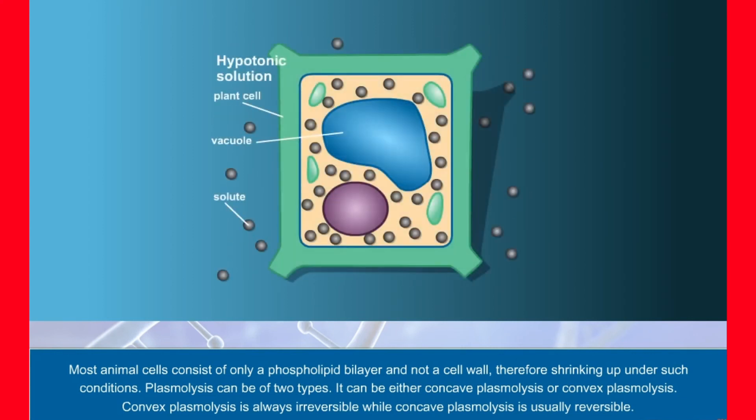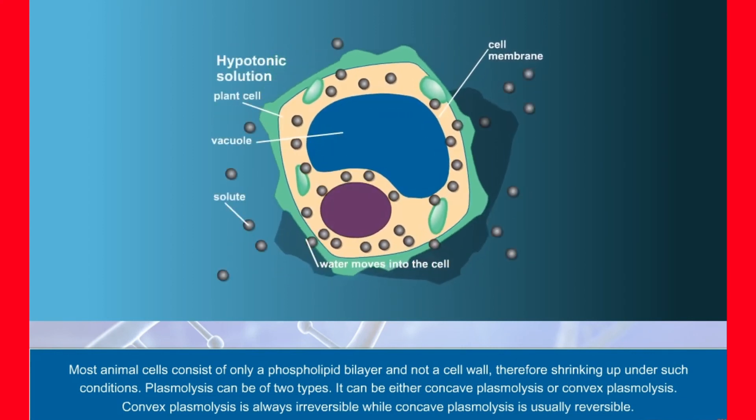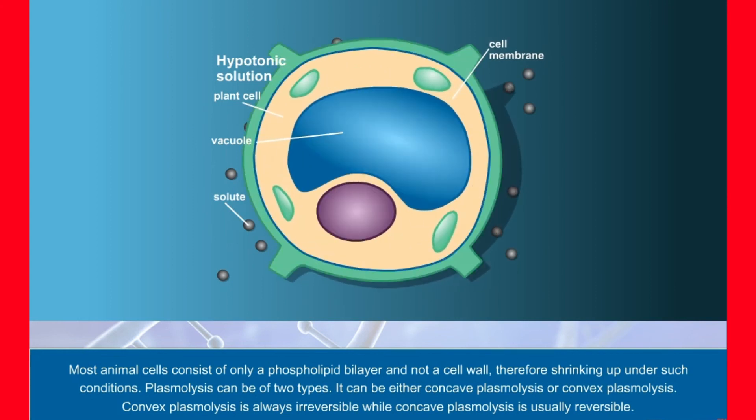Plasmolysis can be of two types. It can be either concave plasmolysis or convex plasmolysis. Convex plasmolysis is always irreversible, while concave plasmolysis is usually reversible.